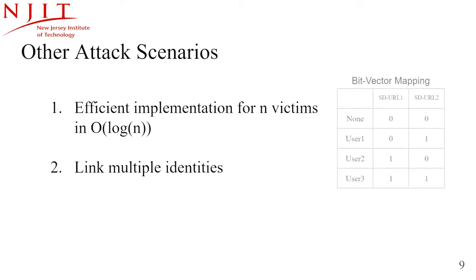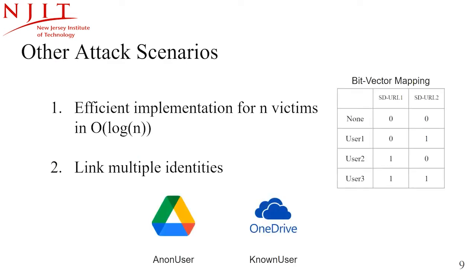There are two other variants of the attack. The first variant efficiently extends the attack from identifying one victim to identifying N victims. The straightforward method is to share N resources with N victims and embed them in the attack page. However, this is not scalable — there is a clever method to scale the attack to N users by only sharing log(N) resources. The bit-vector mapping shown in the table is an example of how to use only two resources to identify three victims.